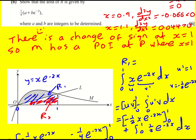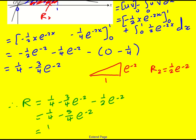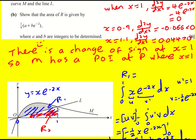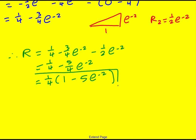We're there. We just need to write it in the form that they've given. So they've actually factorized out a quarter. So it's going to be a quarter 1 minus 5 e to the minus 2. Oh, and that's good, because we've got these integers a and b all checks out. That is our answer to this question. Thank you.